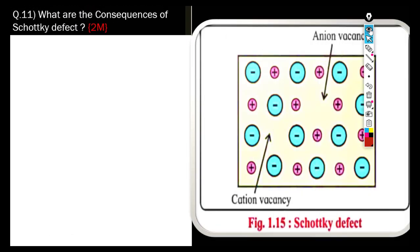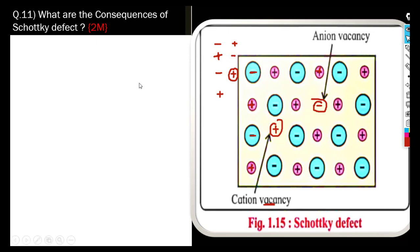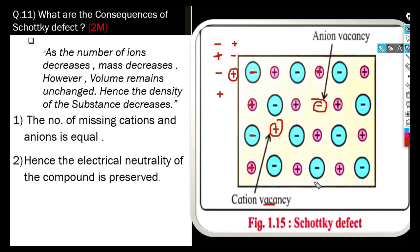Let us try to understand one by one. The first question is: what are the consequences of the Schottky defect? Let us understand using this diagram. As you can see in this diagram, here is a positive ion and here are negative charges — equal number of cations and anions are shown at their regular positions.